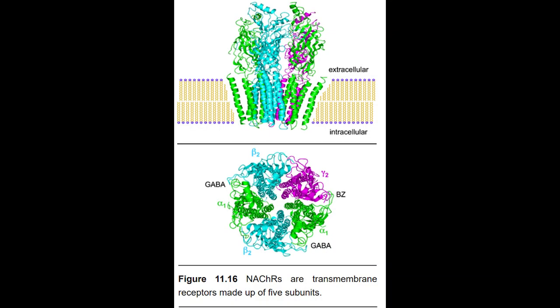Nicotine is the main psychoactive ingredient of tobacco products — an alkaloid compound synthesized in nature by a variety of plants, with the tobacco plant having the highest nicotine content. Other plants of the Solanaceae (nightshade) family, such as eggplants and tomatoes, also contain nicotine, as it was probably an anti-herbivory evolutionary adaptation. The most common routes of administration include inhalation (cigarettes, cigars, and vape), transbuccal (chew, dip, or snuff), or transdermal, as in the nicotine replacement strategy of the nicotine patch.